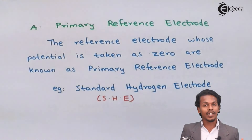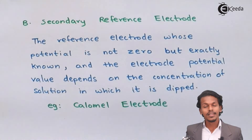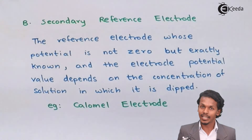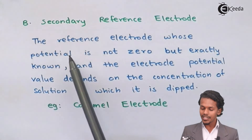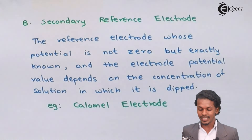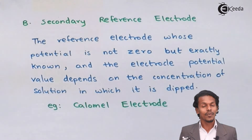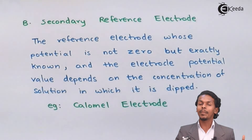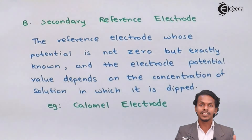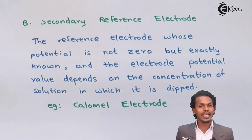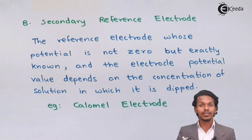Now talking about the secondary reference electrode: it is a reference electrode whose potential is not 0 but is exactly known. The electrode potential value depends on the concentration of the solution in which it is dipped. Unlike the primary reference electrode — which does not depend on temperature and remains constant — the secondary reference electrode depends on both concentration and temperature. We can use both primary and secondary reference electrodes to determine the EMF of a particular electrode.